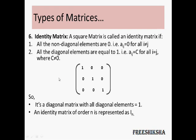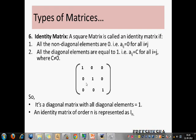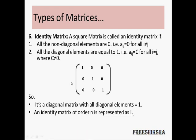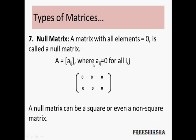This is similar to the concept of 1 as the multiplicative identity of any number — if you multiply any number by 1, the number remains as it is. Similarly, if you multiply any matrix with the identity matrix, the matrix remains as it is. It's represented as Iₙ, where n denotes the size of the matrix.